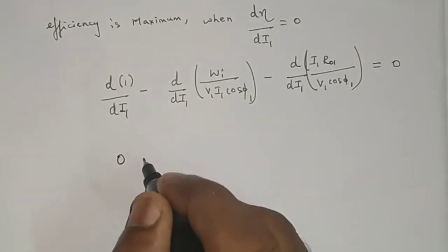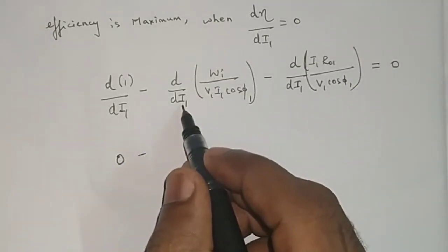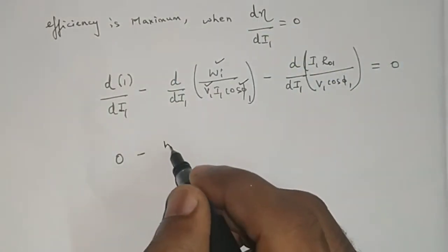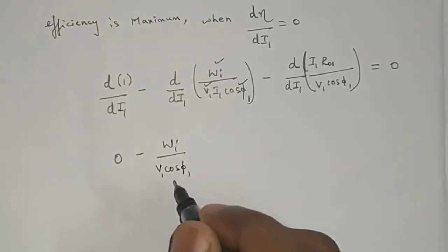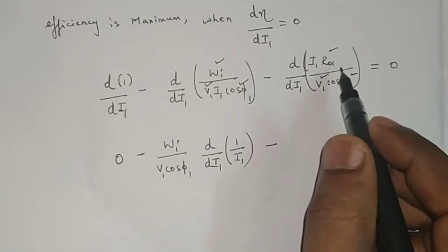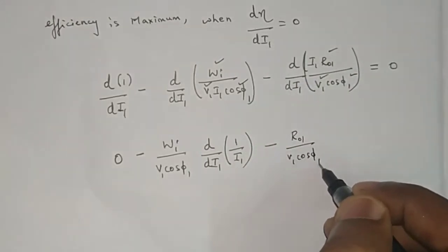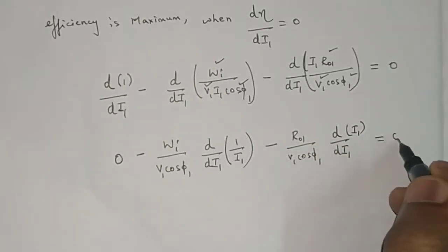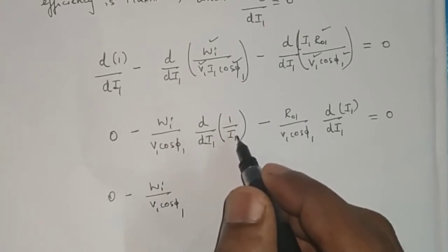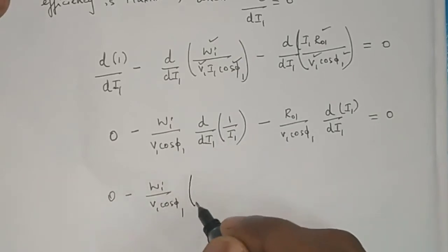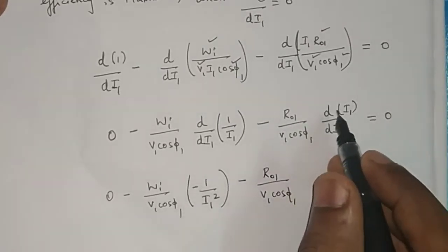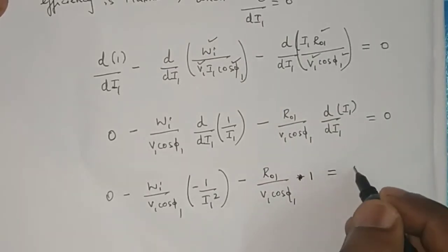Differentiating: the differentiation of 1 with respect to I1 is zero. For the second term, iron loss, V1, and cos φ1 are all constants, so I take out iron loss divided by V1·cos φ1 as a constant, leaving differentiation of 1/I1 inside. Similarly, R01 divided by V1·cos φ1 is constant, leaving differentiation of I1 inside. So I get: zero minus iron loss divided by V1·cos φ1 times (−1/I1²), minus R01 divided by V1·cos φ1 times 1, equals zero.